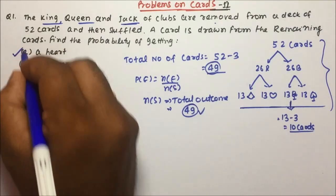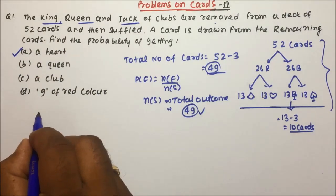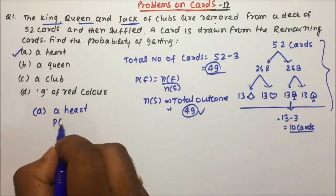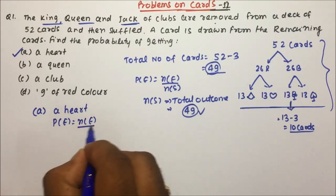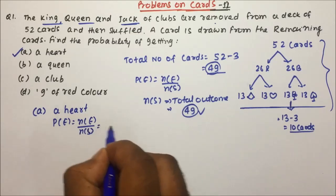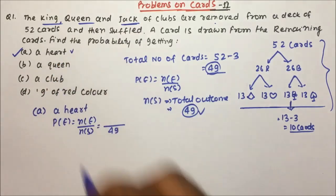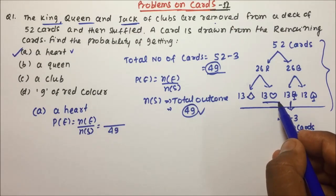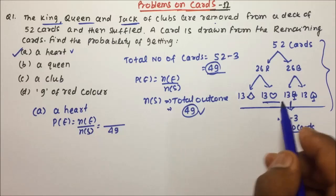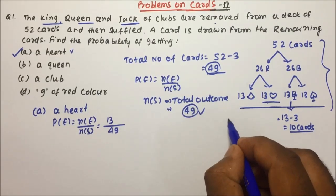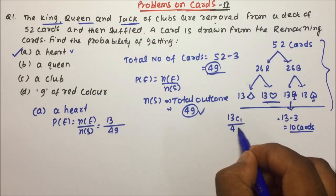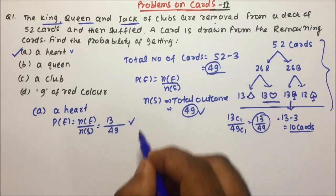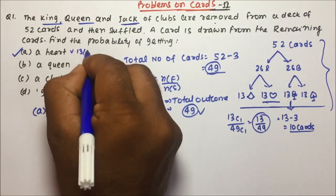Question 1A: you want a heart. Probability = Ne / Ns. Total outcomes = 49. How many hearts are there? Hearts are 13 — they were not affected by the removal. So you select 1 from 13: that is 13 C1 divided by 49 C1, which gives 13 by 49. So the answer for question A is 13/49.